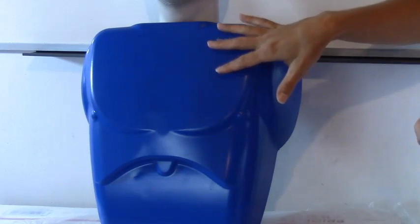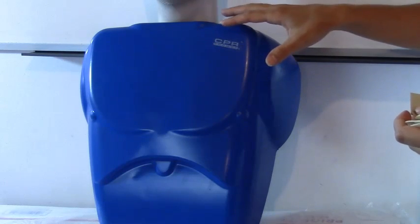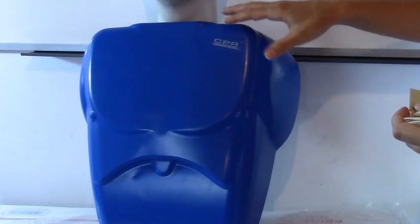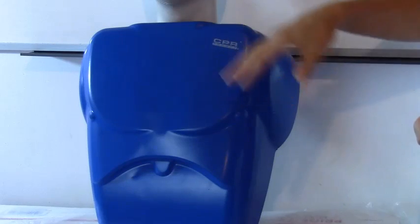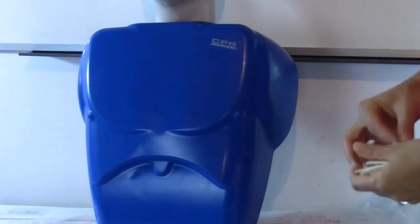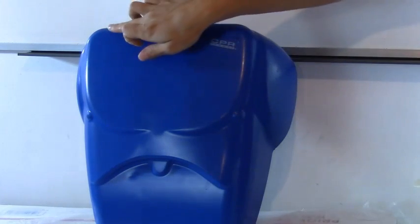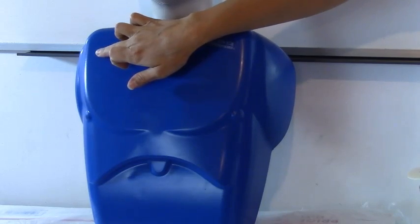So first what we're going to do is we're going to place our arm leads. Now you can use your left right arms and lower legs but you can also use the chest and since this dummy doesn't have any arms or legs we're going to use the chest. So first what we're going to place we're going to place our right arm lead and you're going to find the clavicle and you're just going to go right below the clavicle.